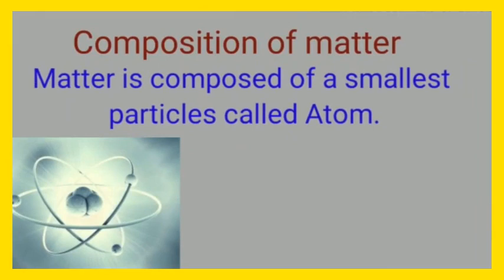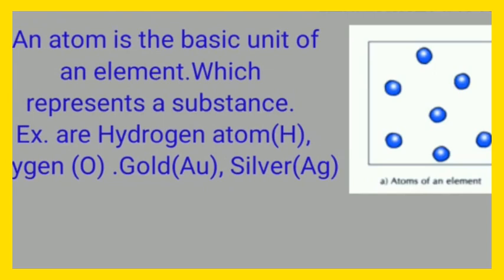My next topic is composition of matter. Matter is composed of a smallest particle called atom. An atom is the basic unit of an element, which represents a substance. Examples of elements are hydrogen, oxygen, gold and silver. Atoms retain the property of their respective elements.